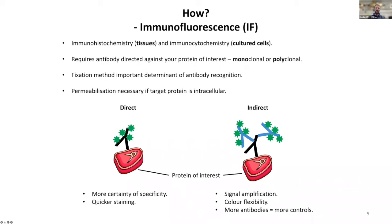Fixation methods are important for antibody recognition. For antibodies to work with intracellular proteins, you need to permeabilize your tissue and cells; otherwise you can't get the antibody through the plasma membrane. There are two principal methods: the direct method, where your primary antibody is fluorescently conjugated, so you don't need a secondary antibody. This gives more certainty of specificity and quicker staining because you only have one labeling step.